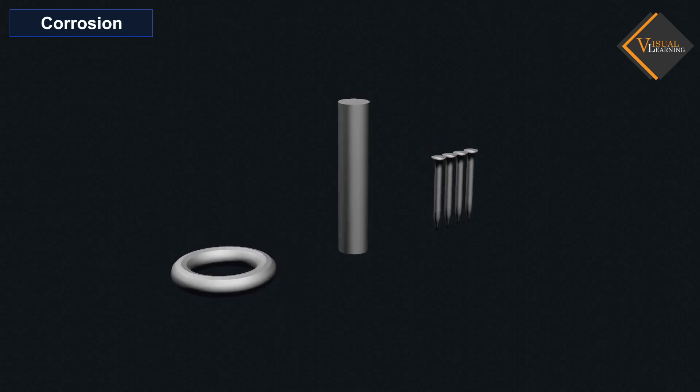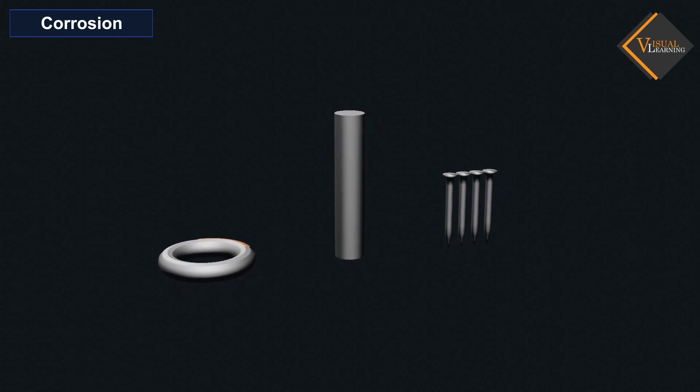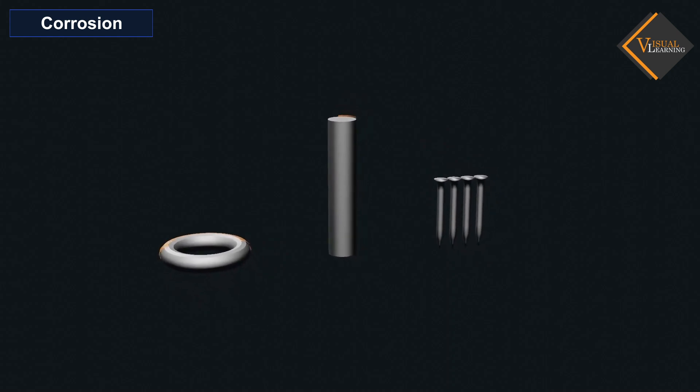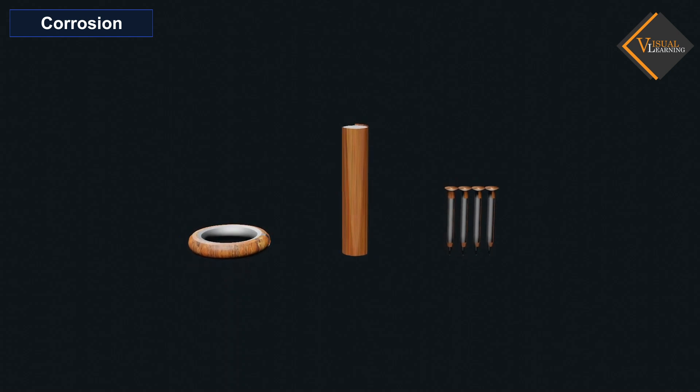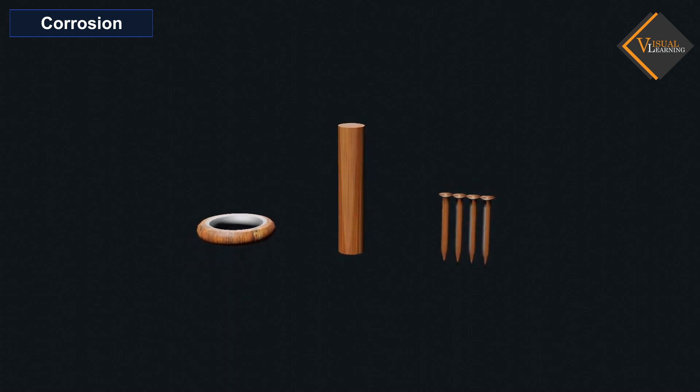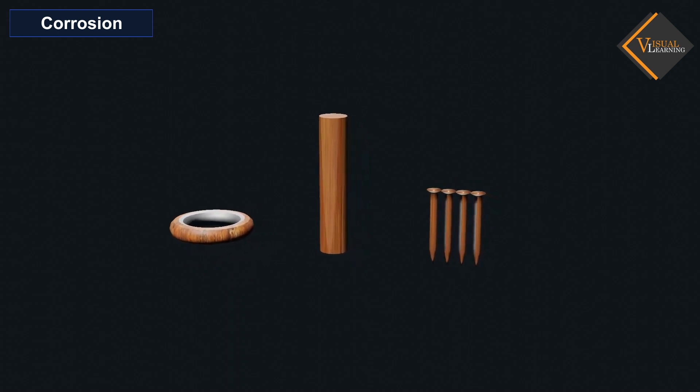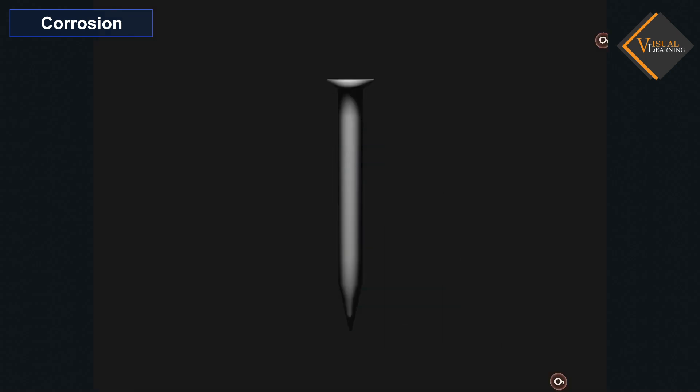Corrosion is one of the most common phenomena we observe in our daily lives. You must have noticed that some objects made of iron are covered with an orange or reddish-brown colored layer at some point in time. The formation of this layer is the result of a chemical process known as rusting, which is a form of corrosion.